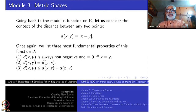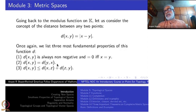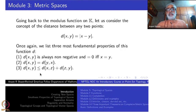What are the fundamental properties of the distance function? The first is that the distance function is always a non-negative real number, and it is zero if and only if x equals y. The second property is that the distance function is symmetric: d(x,y) is the same as d(y,x). Distance from x to y is the same as distance from y to x.